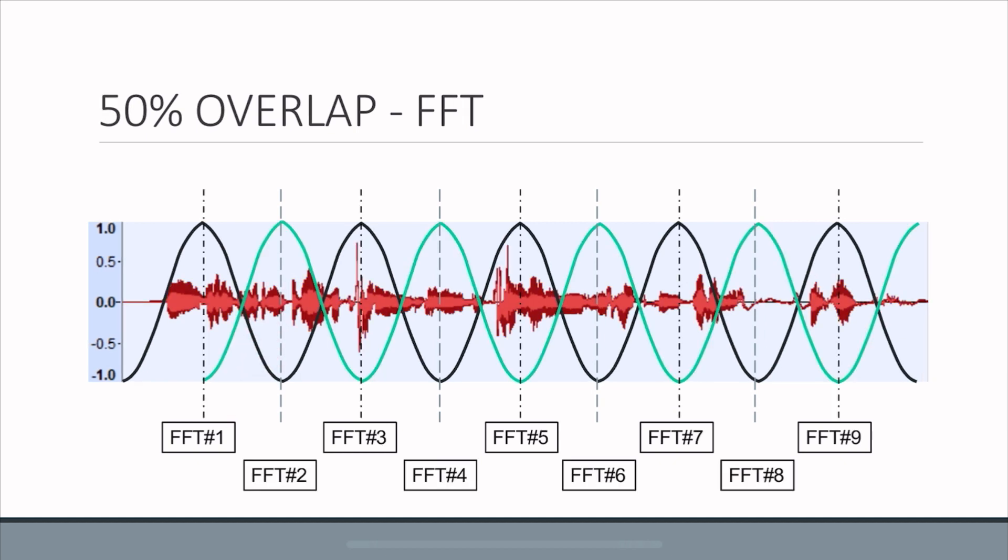But when you do 50% overlap, now rest assured you no longer lose some information here. The black window forces the signal to be periodic, but the green window also forces the signal to be periodic. It's like best of both worlds. You capture information here as well as here and so on.